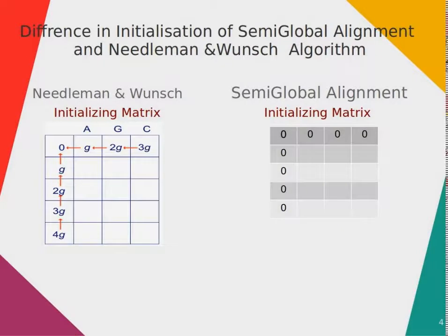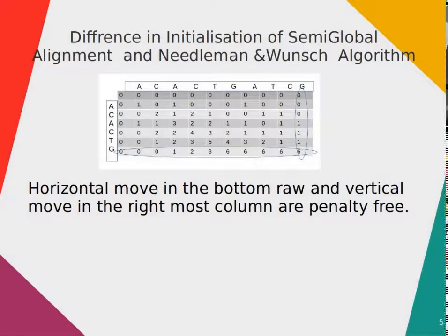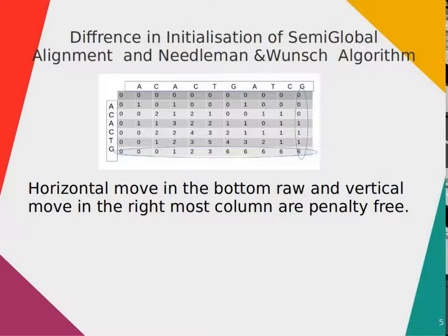The difference in initialization between semi-global alignment and Needleman's algorithm is demonstrated in this figure. Please note the difference is not only in the initialization of the first row and first column, but also in the last row and last column — horizontal moves in the bottom row and vertical moves in the rightmost column are also penalty-free.